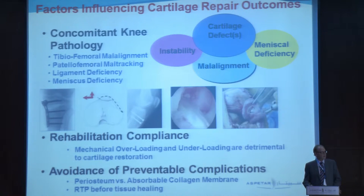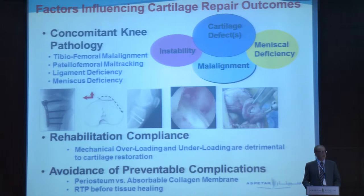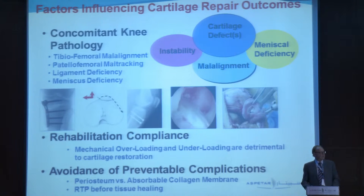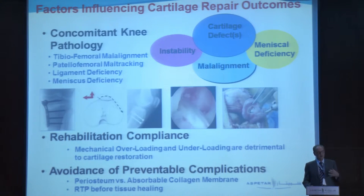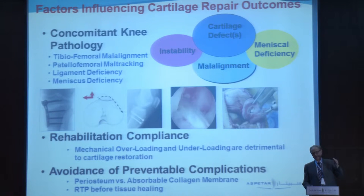As far as rehabilitation, mechanical overloading or underloading are detrimental to cartilage restoration, as is compliance — actually doing what you're supposed to from a therapy standpoint. Regarding avoidable complications: periosteum versus absorbable collagen membrane — the re-operation rate alluded to with ACI relates to periosteal reattachment that overgrows. Fortunately, over a decade we've learned periosteum is seldom used, and the re-operation rate went from 28% to less than 5% for ACI. That's really not an issue anymore.